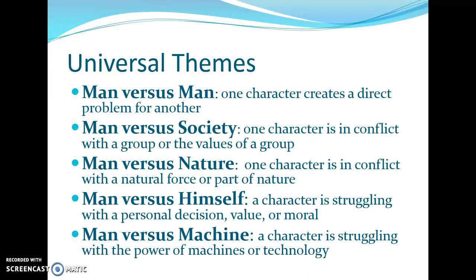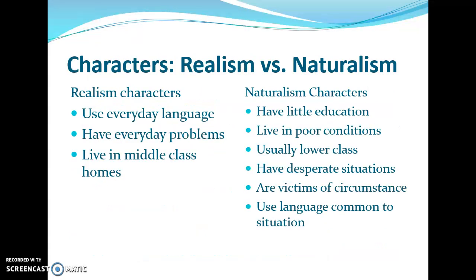The universal themes are all important. Man versus man: one character creates a direct problem for another. Man versus society: one character is in conflict with the values of a group. Man versus nature: one character is in conflict with a natural force. Man versus himself: a character struggles with a personal decision, value, or moral — seen a lot in realism. Man versus machine: a character struggles with the power of machines or technology.